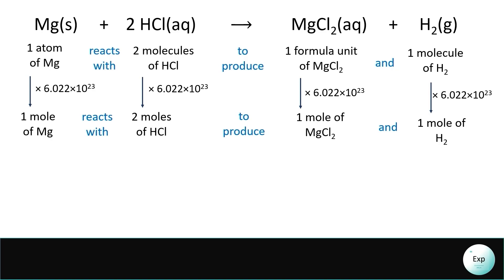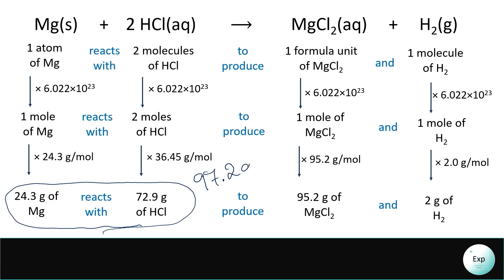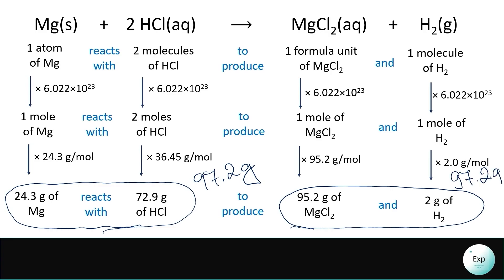If we take all of our moles multiplied with their respective molar masses, then we can find the grams. The gram-based interpretation helps us determine whether the law of mass conservation was observed: 24.3 grams of magnesium reacts with 72.9 grams of hydrochloric acid to produce 95.2 grams of magnesium chloride and 2 grams of hydrogen. Adding the reactant masses gives 97.2 grams, which equals the combined product mass of 97.2 grams, meaning the law of mass conservation was observed.